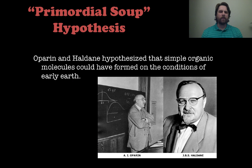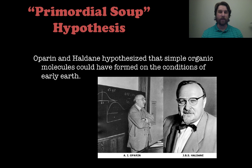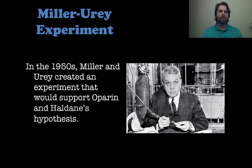So let's talk about a couple of different experiments and hypotheses that some early scientists proposed. The first is the primordial soup hypothesis. Oparin and Haldane had this hypothesis that simple organic molecules — the building blocks of proteins — could have formed in the conditions of that early Earth, that really hot and very unpleasant-looking place. Miller and Urey, scientists in the 1950s, devised an experiment to actually test this hypothesis.